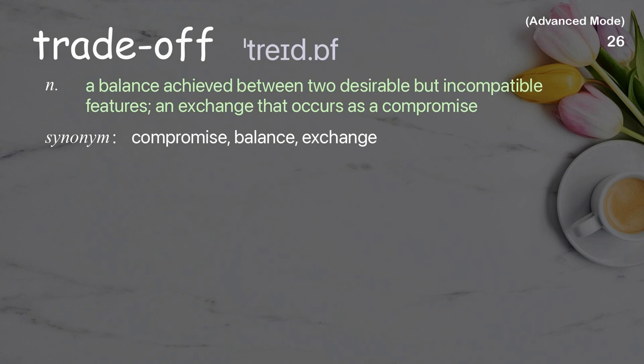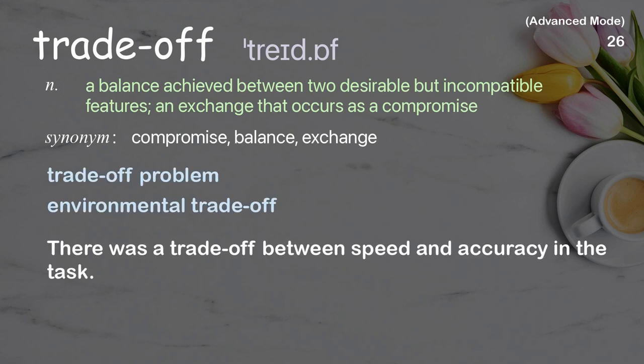Trade-off: A balance achieved between two desirable but incompatible features; an exchange that occurs as a compromise. Examples: Trade-off problem. Environmental trade-off. There was a trade-off between speed and accuracy in the task.